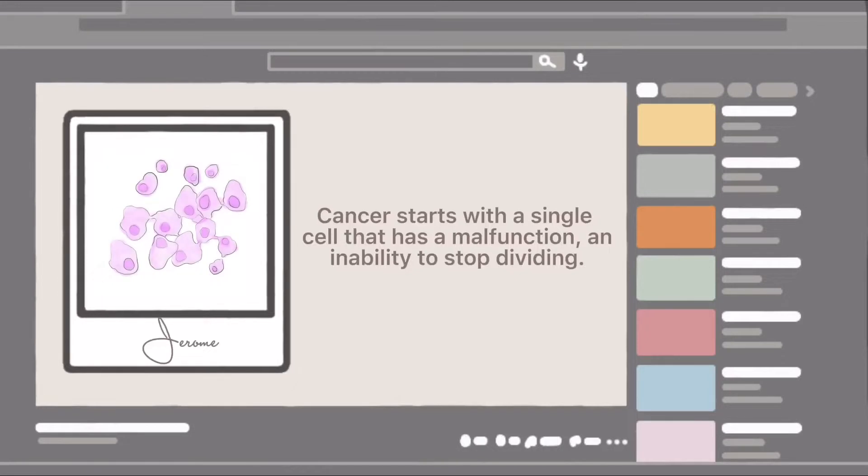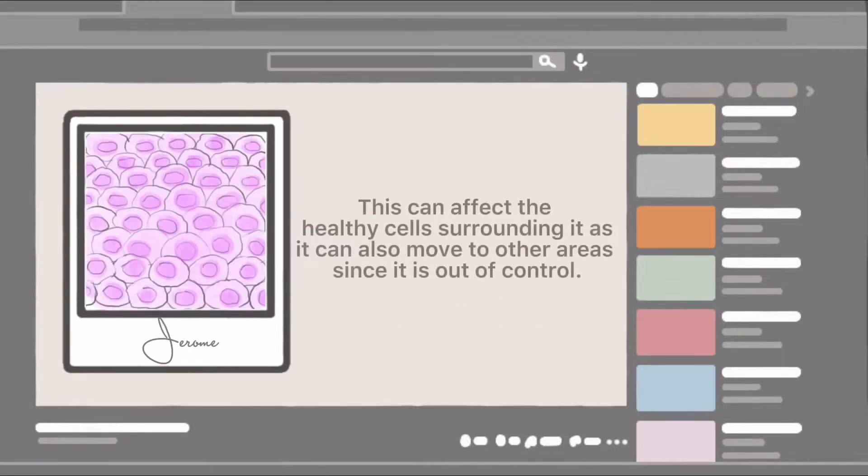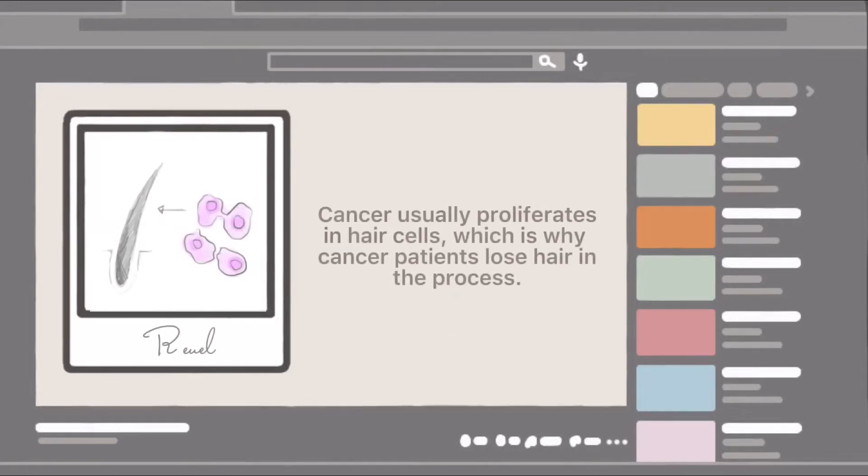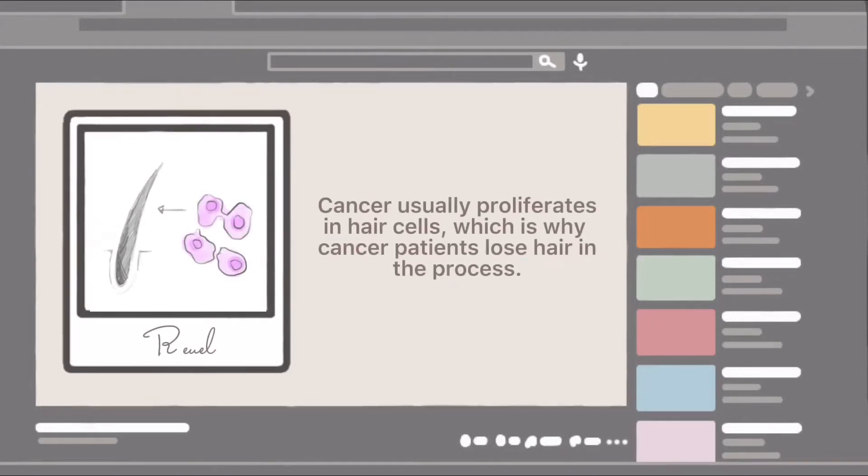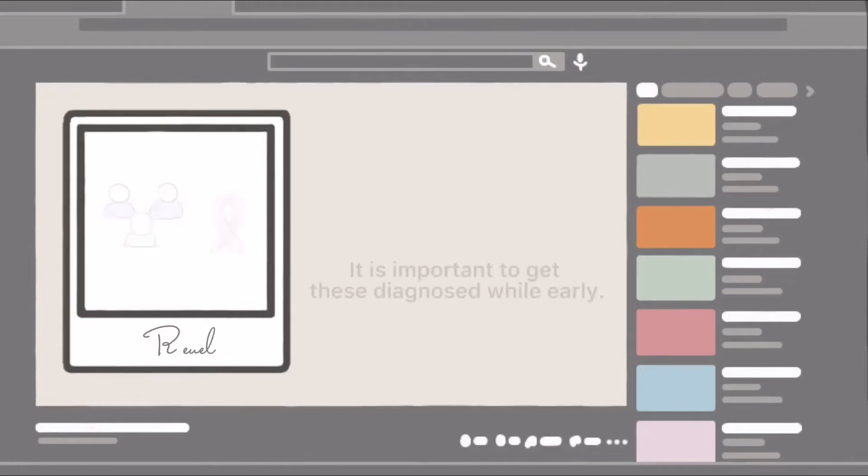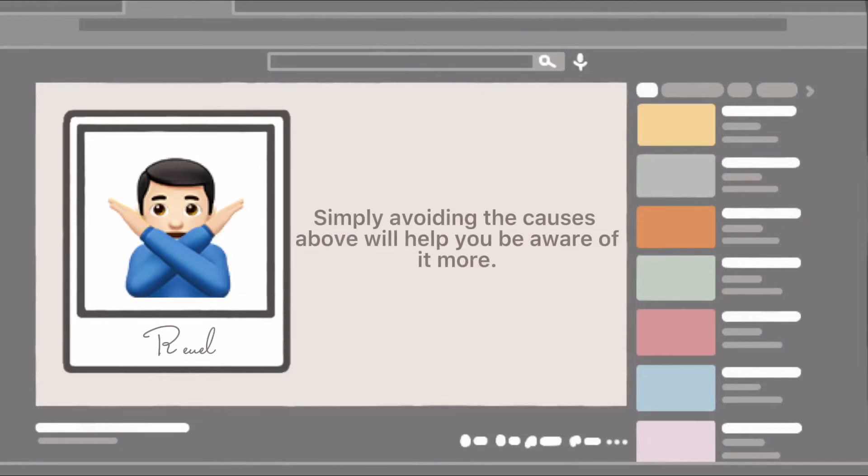Cancer starts with a single cell that has a malfunction and inability to stop dividing. This can affect the healthy cells surrounding it and can also move to other areas since it is out of control. Cancer usually proliferates in hair cells, which is why cancer patients lose their hair in the process.